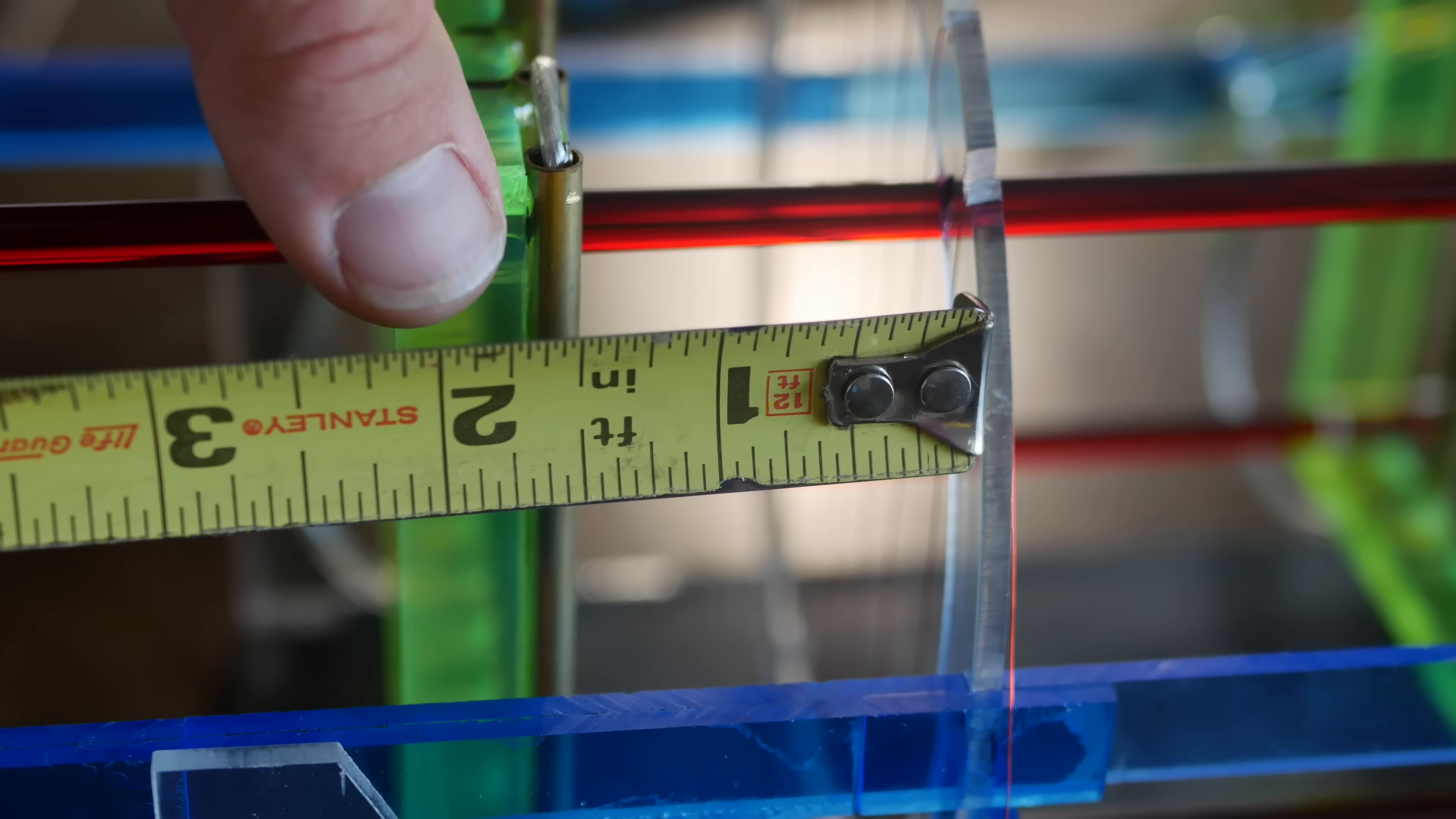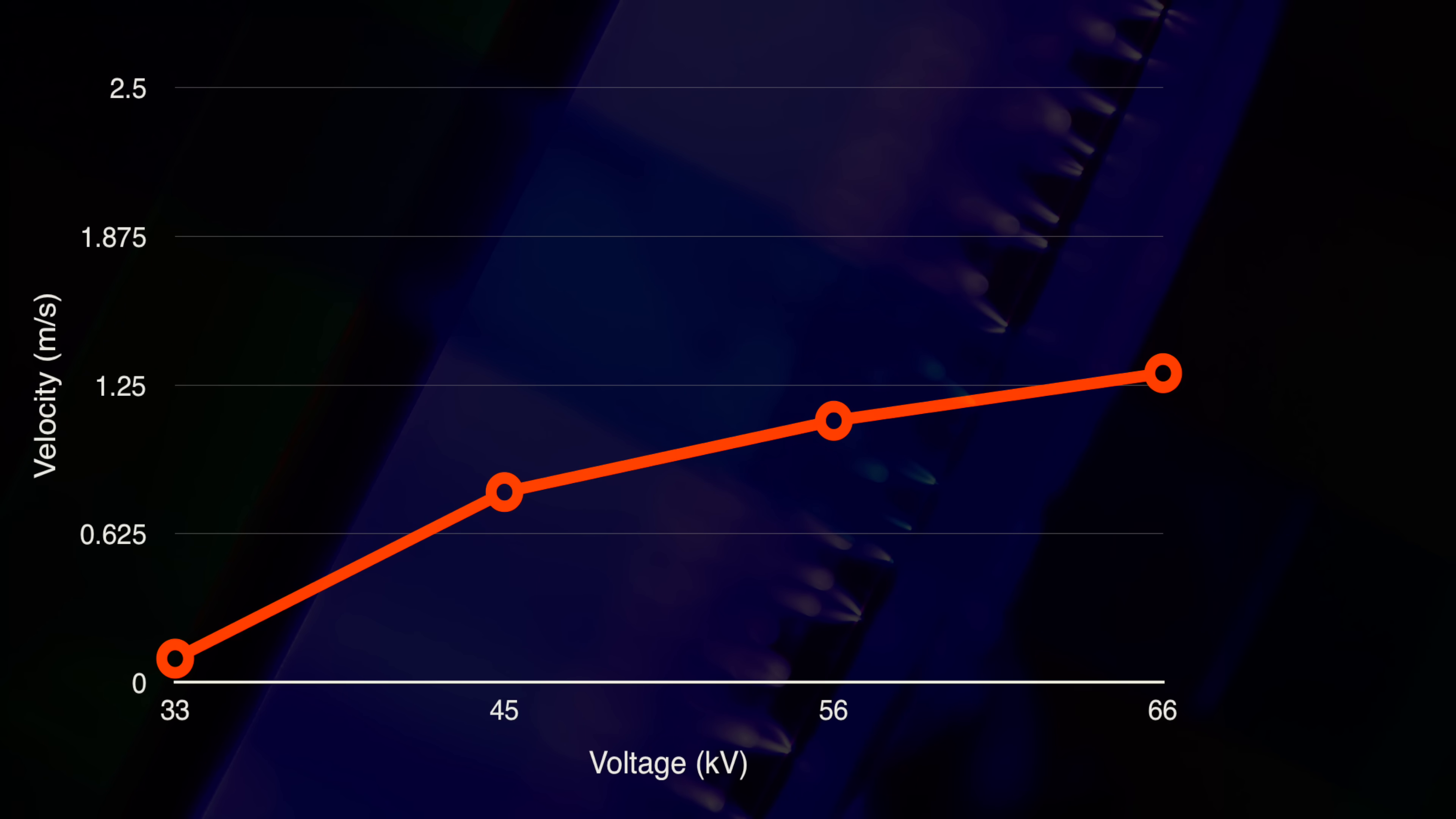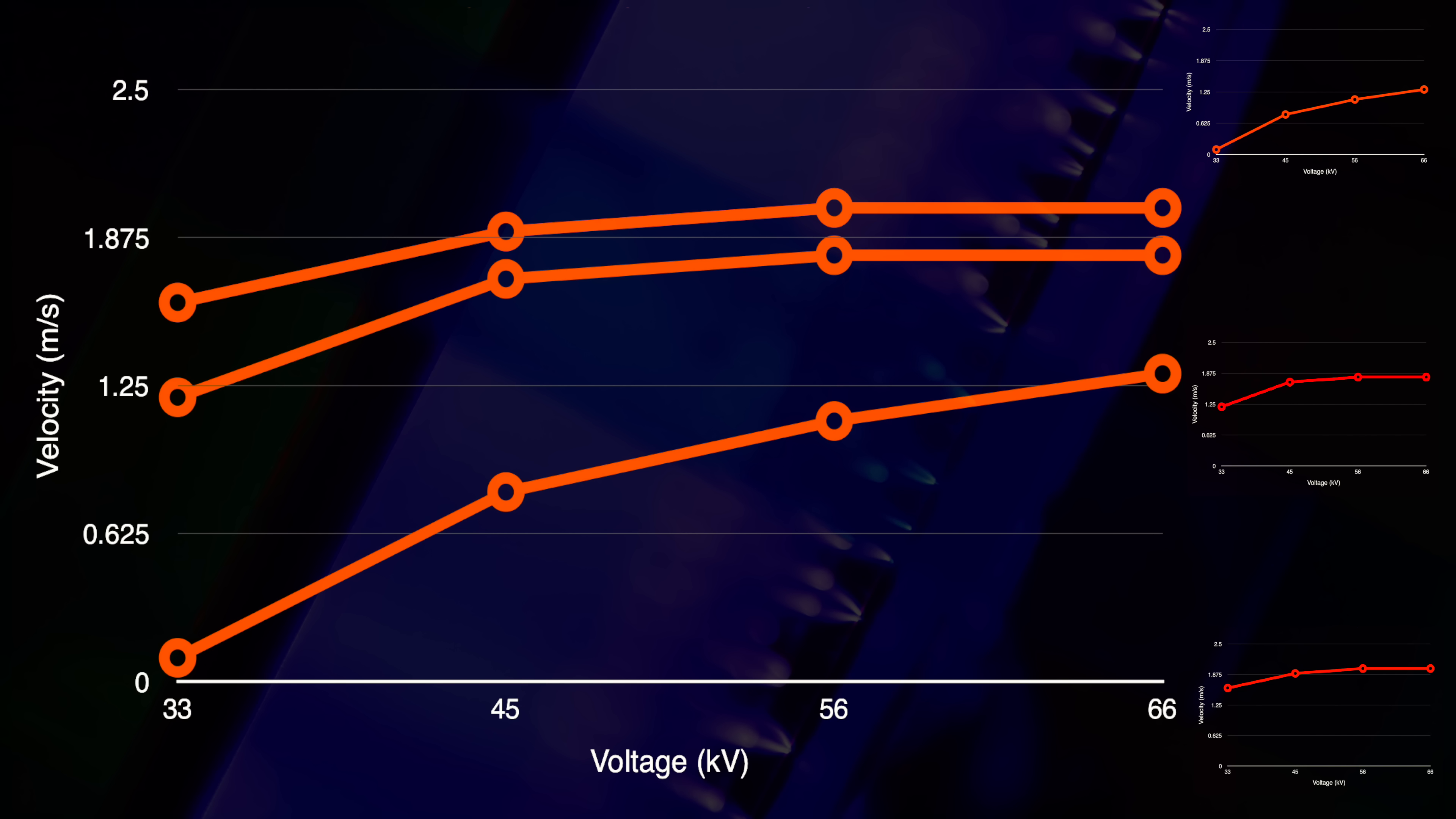I repeated this process for 1.5 inch and 2 inch spacing, which provided really clear data. 2 inches results in abysmal velocities of 1.3 meters a second. 1.5 inches showed an increase up to 1.8 meters a second, and 1 inch spacing was king at 2 meters per second. Placing them together shows a pretty obvious trend.